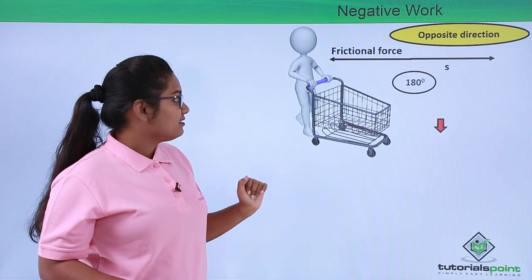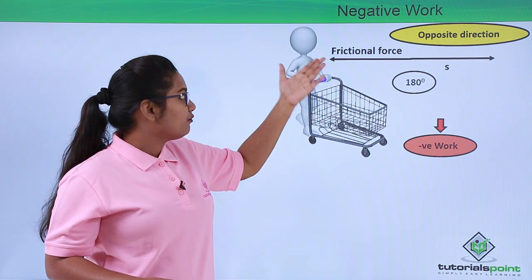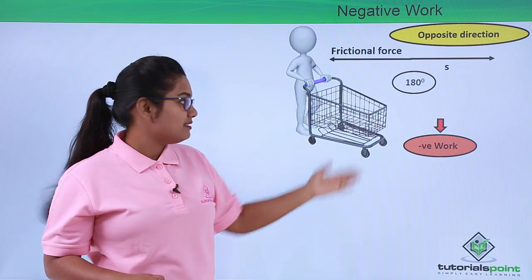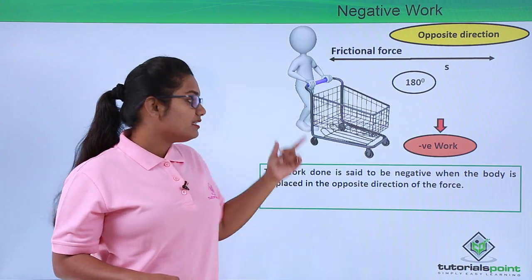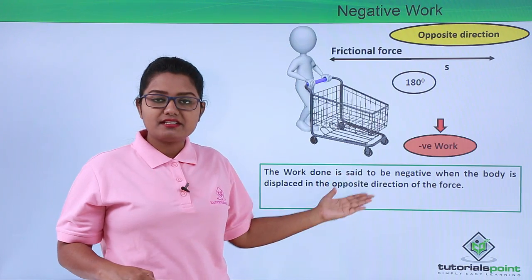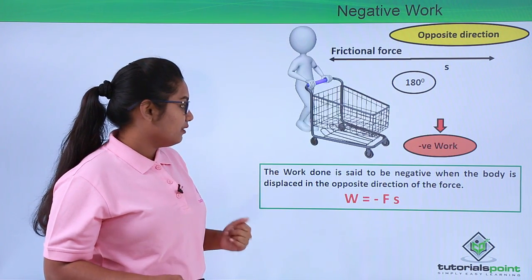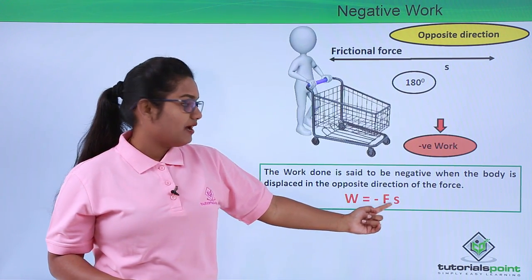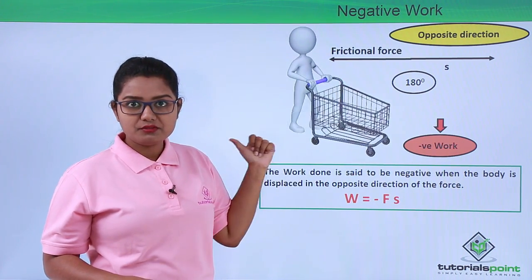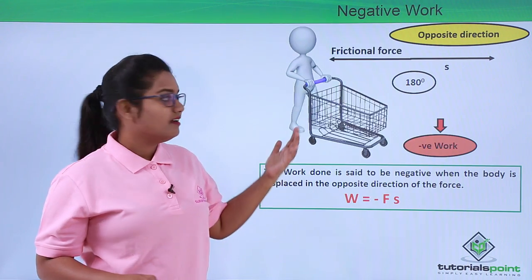Since the frictional force and displacement are in exactly opposite directions, the work done by the frictional force is negative. The work done is said to be negative when the body is displaced in the opposite direction of the applied force. So W equals minus F times S, resulting in a negative work done.